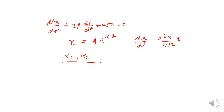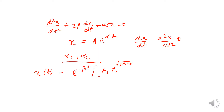The final generalized solution for damped oscillation was found to be e^(-βt) multiplied with: A₁·e^(√(β²−ω₀²)·t) plus A₂·e^(−√(β²−ω₀²)·t). This was the generalized solution.